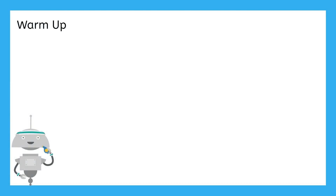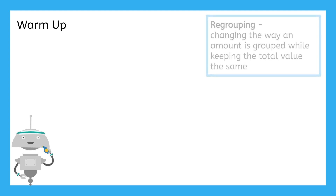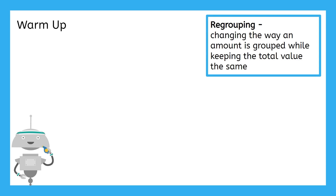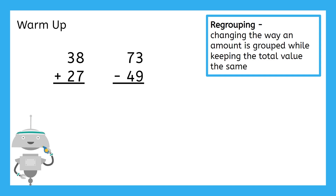Let's start with a warmup. When adding and subtracting multi-digit numbers, we'll often need to regroup. Remember, this means changing the way an amount is grouped while keeping the total number of numbers and the total value the same. 38 plus 27 and 73 minus 49 both require regrouping and are two great warmup problems to get us ready for today's practice. Take a moment to pause here and solve them in your guided notes. We'll check your work when you're all done.